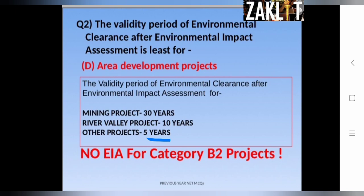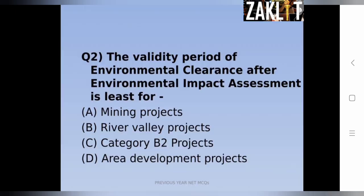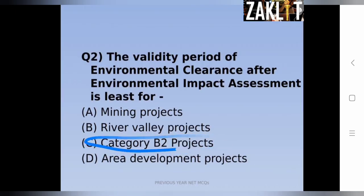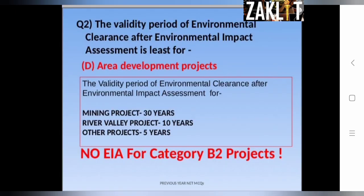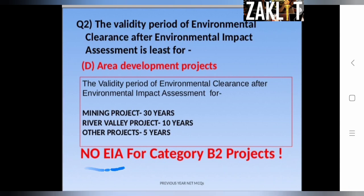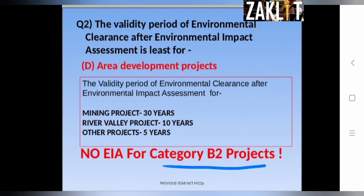Regarding the option of category B2 projects: for this kind of project, no EIA — that is, no environmental impact assessment — is carried out. This question has been asked several times with different twists. Remember: no EIA is done for category B2 projects.